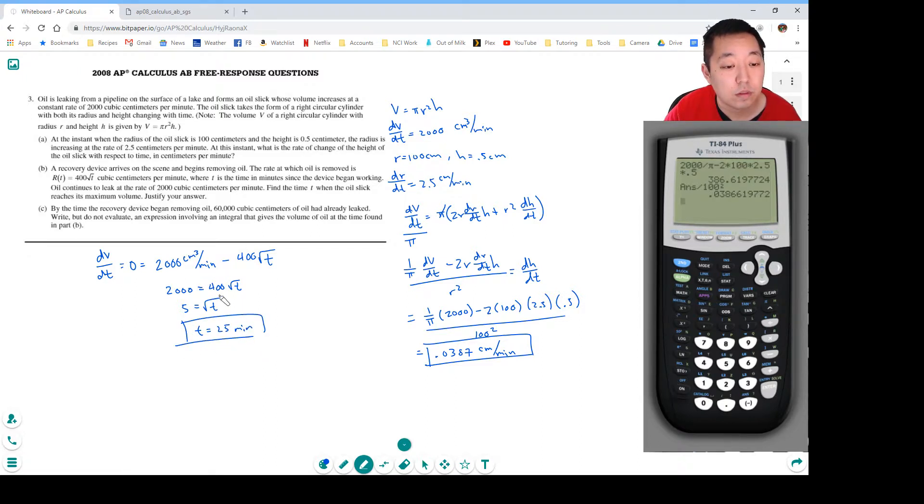5 times 400 is 2,000, so 2,000 divided by 400 is 5, the square root of 25 minutes. By the time the recovery device began removing oil, 60,000 cubic centimeters of oil had already leaked.